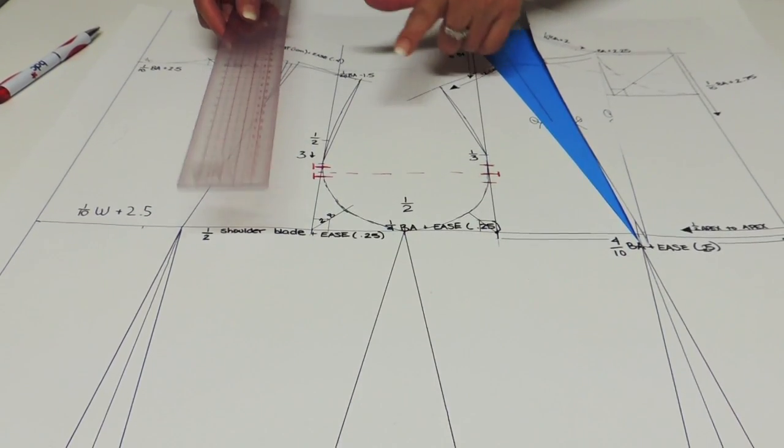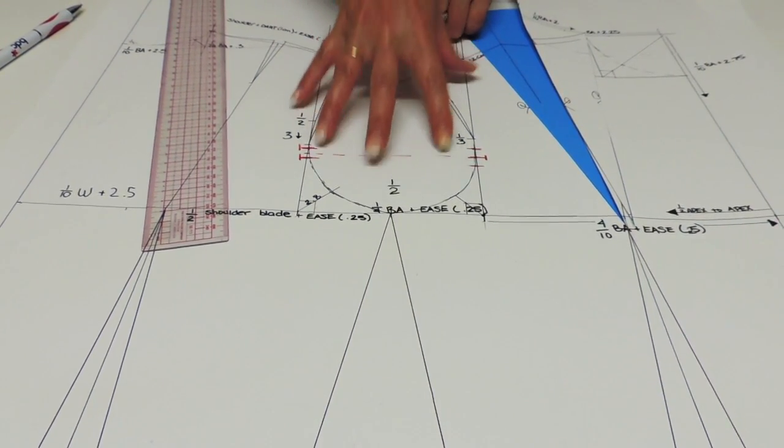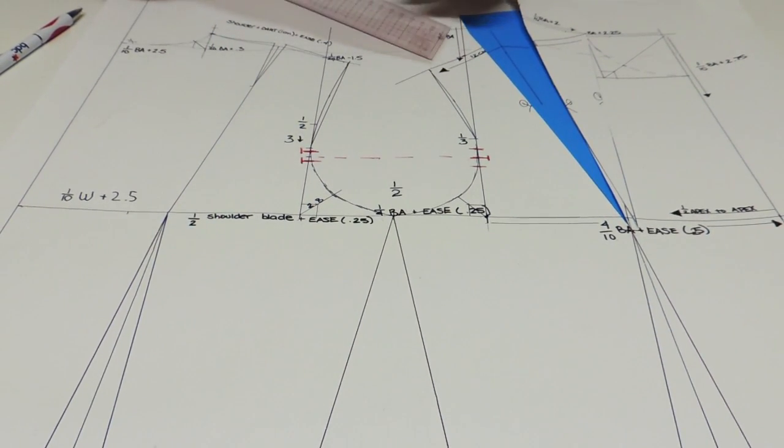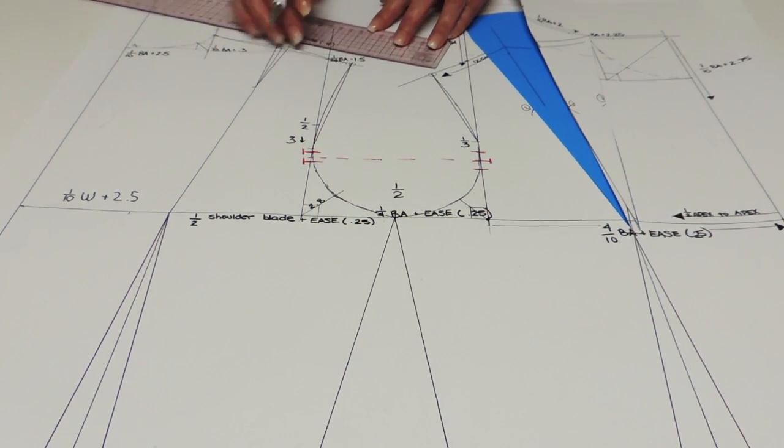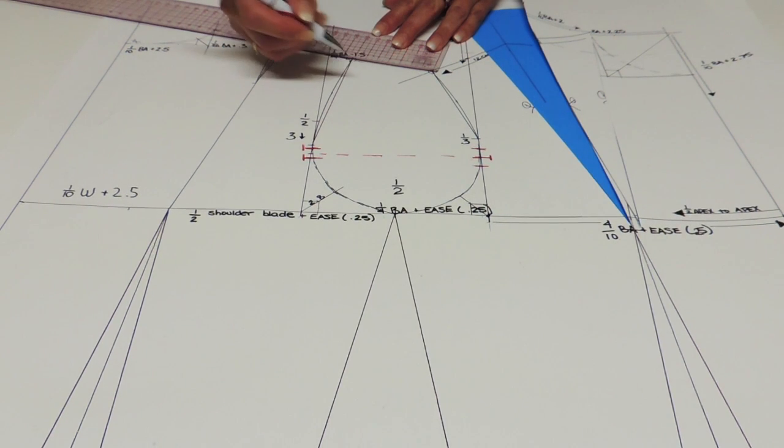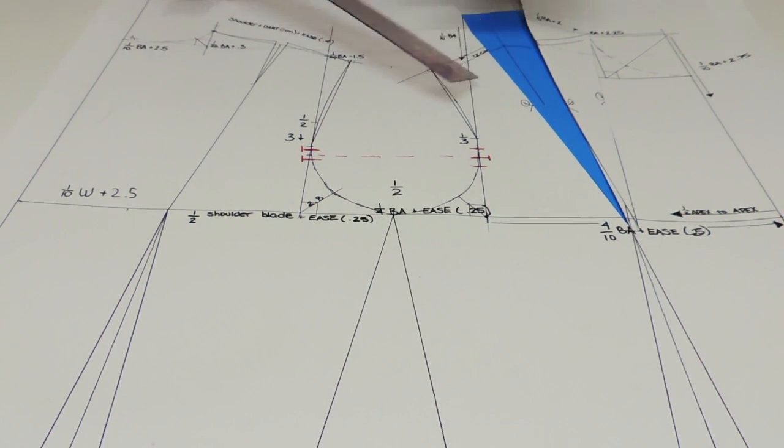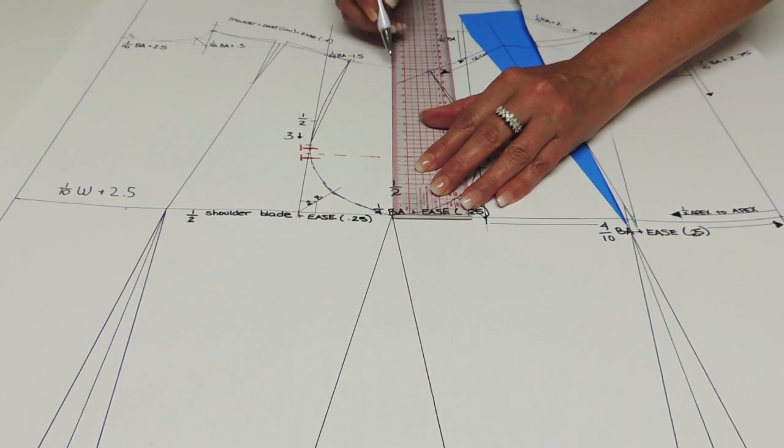The sleeve head measurement or height comes from your block plan and you're going to connect the shoulder point of the front and the back. Connect and find the middle and you're going to measure from the bust line to that middle point.